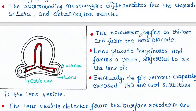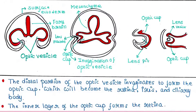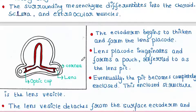Now the ectoderm begins to thicken and form the lens placode. Here is the ectoderm layer getting thickened — you can see this is the thick part of the ectoderm. This thick part of the ectoderm is the lens placode.